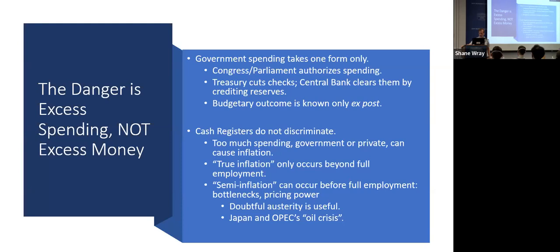The real danger is excess spending, not excess money. Congress authorizes spending, the Treasury cuts the checks, the central bank clears them by crediting reserves — there's no independence in this; central banks can't say no. Too much spending — whether government or private — can cause inflation. True inflation by Keynes's definition only exists beyond full employment, though you can get semi-inflation before full employment due to bottlenecks. COVID is a good example of high inflation well below full employment.